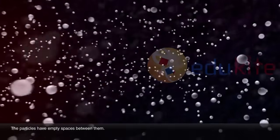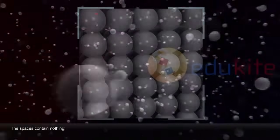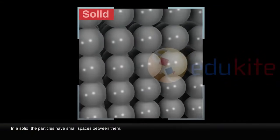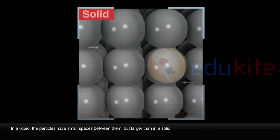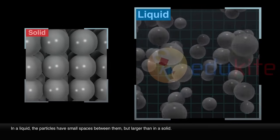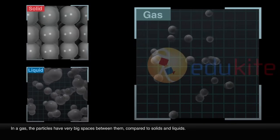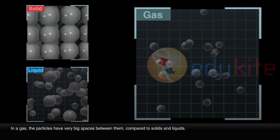The particles have empty spaces between them. The spaces contain nothing. In a solid, the particles have small spaces between them. In a liquid, the particles have small spaces between them but larger than in a solid. In a gas, the particles have very big spaces between them compared to solids and liquids.